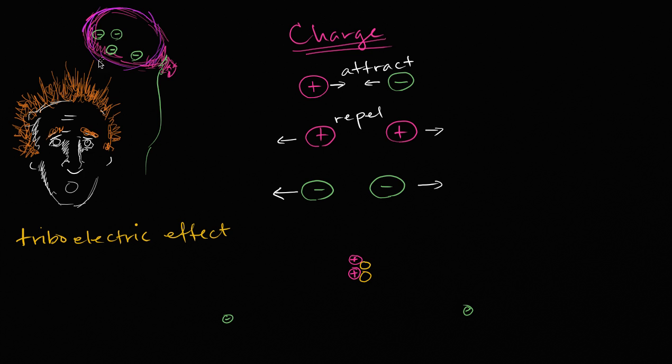And so when you put the balloon now close to your hair, remember, like charges repel each other. So the electrons in your hair try to move away from these other electrons. The negative charge tries to move away from the negative charge. And the tips of your hair will then become more positive and they will be attracted to the balloon.